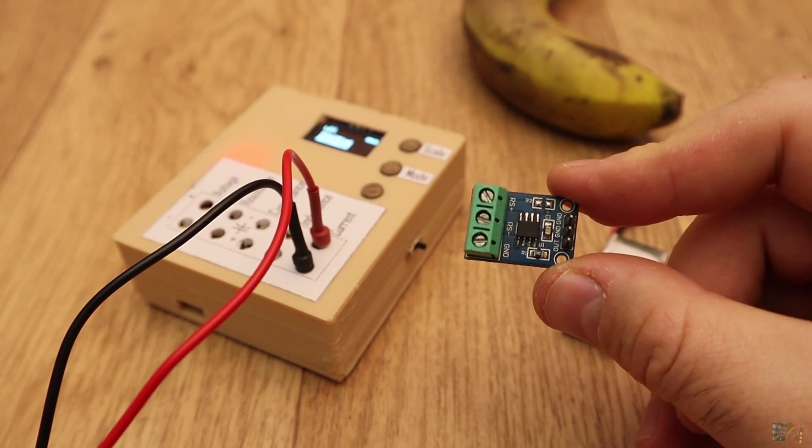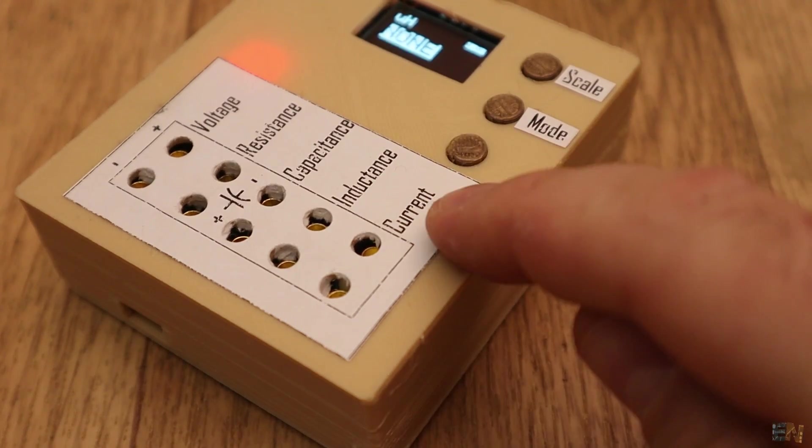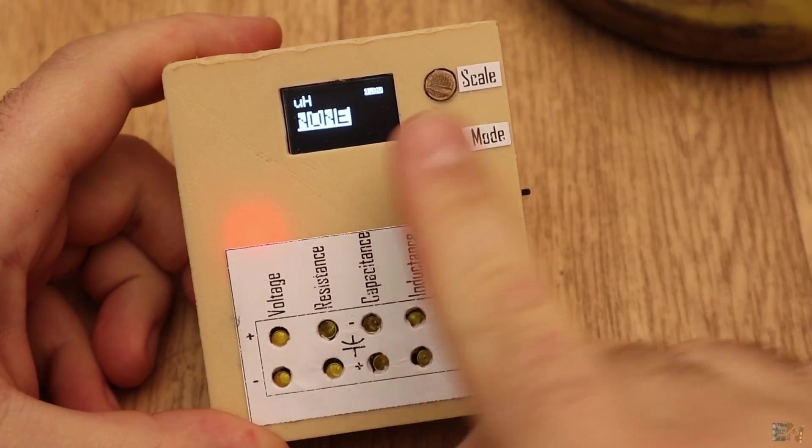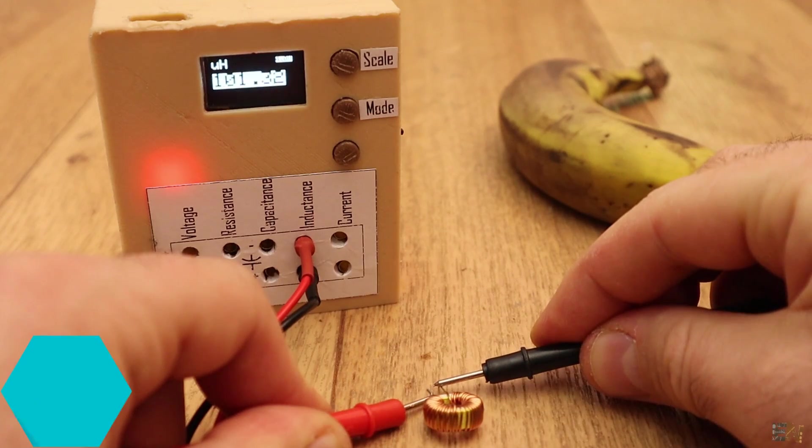It has a current module so it can also measure current values. And finally, it uses the resonance frequency detection of an LC tank and can also measure inductance.